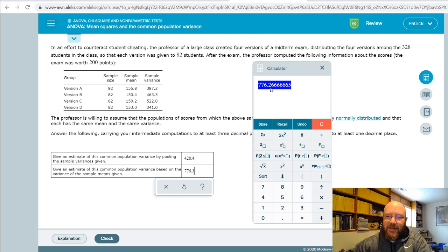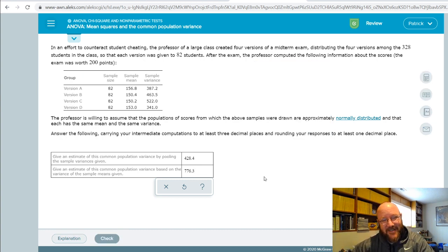So that gives us our estimate of the common population variance based upon the variance of the sample means given, also known as mean square treatment—or mean square error? My bad. Or no, that one is mean square treatment. I always have to check my notes on those, but there we go, so I got that one right.